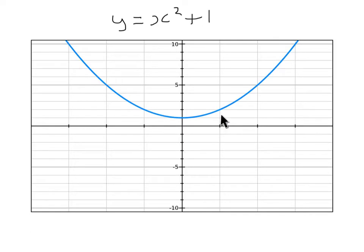1 squared is 1, add 1 is 2. 2 squared is 4, add 1 is 5. 3 squared is 9, add 1 is 10. So putting a plus 1 at the end shifts the whole graph one unit upwards.